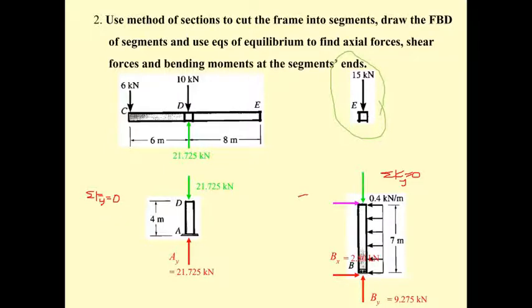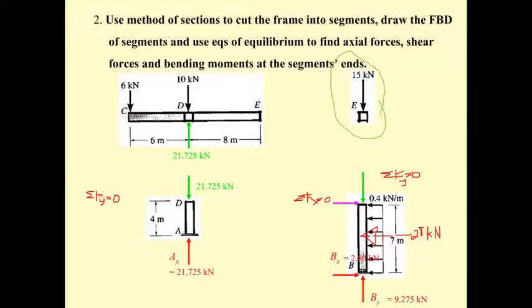For summation of F sub X equal to zero, the result equals the distributed load resultant of 2.8 kN. The B sub X and this force cancel each other, so the horizontal force is zero. Then computing the moment by summation of moments about point E equal to zero, we get terms of plus 2.8 times 3.5, plus 2.8 times 3.5, minus 2.8 times 7, which gives M sub E.